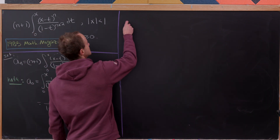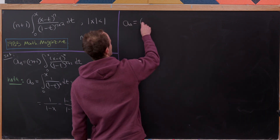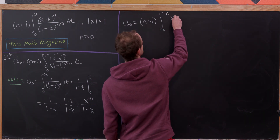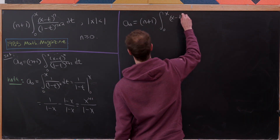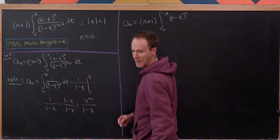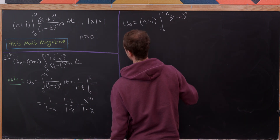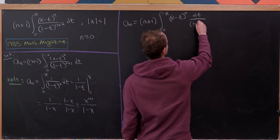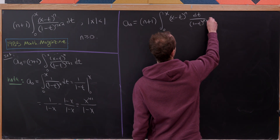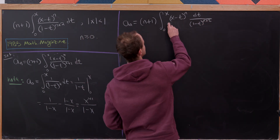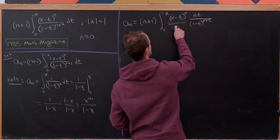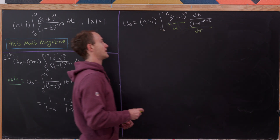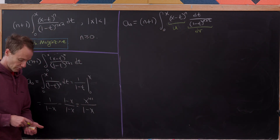Next, we find a recurrence relating a sub n to a sub n minus 1. Copying a sub n — n plus 1 times the integral from 0 to x of x minus t to the n times dt over 1 minus t to the n plus 2 — we use integration by parts, with u equal to x minus t to the n, and dv equal to dt over 1 minus t to the n plus 2.